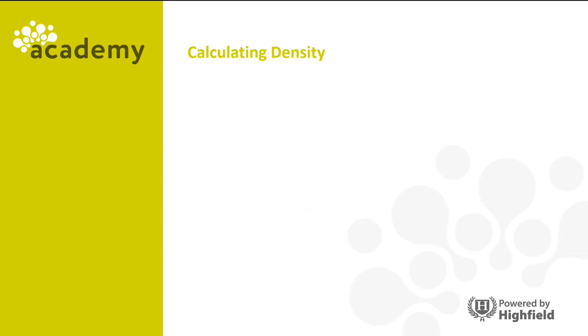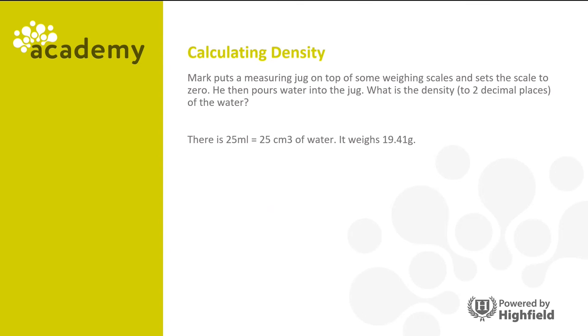Let's look at calculating density now. Mark puts a measuring jug on top of some weighing scales and sets the scales to zero. He then pours water into the jug. What is the density to two decimal places of the water? There's 25 milliliters, which is 25 cubic centimeters of water, and it weighs 19.41 grams. So we use the formula: density equals mass divided by volume.